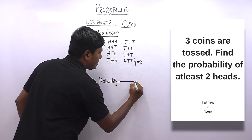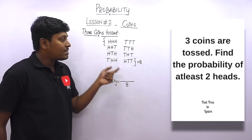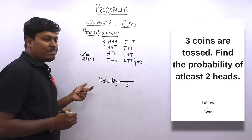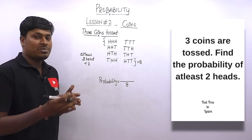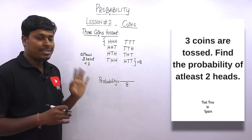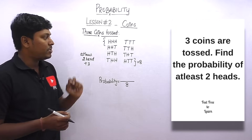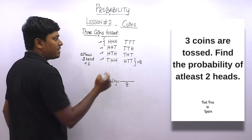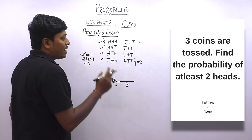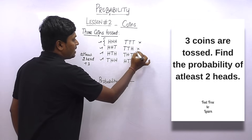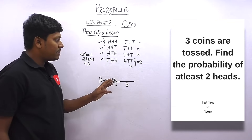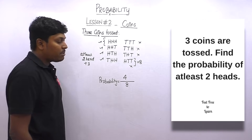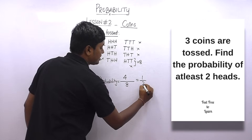Question 6: Three coins are tossed — find the probability of at least two heads. 'At least two' means minimum two heads, so we count outcomes with exactly two heads or exactly three heads. That gives four favorable outcomes out of eight. Probability = 4/8 = 1/2.